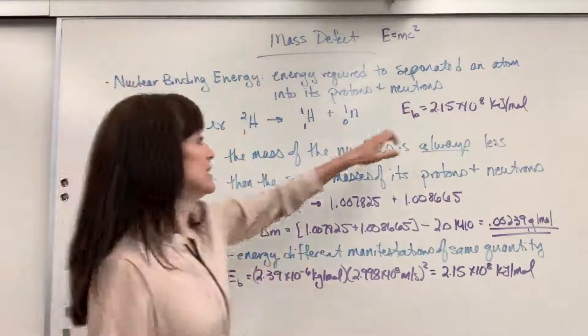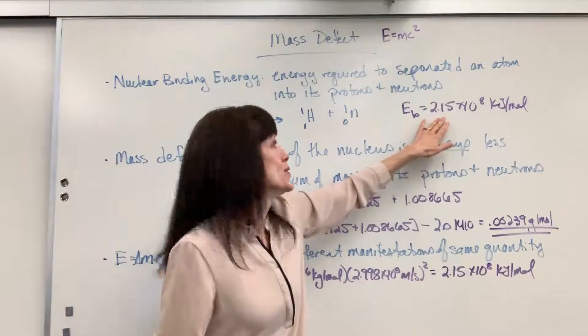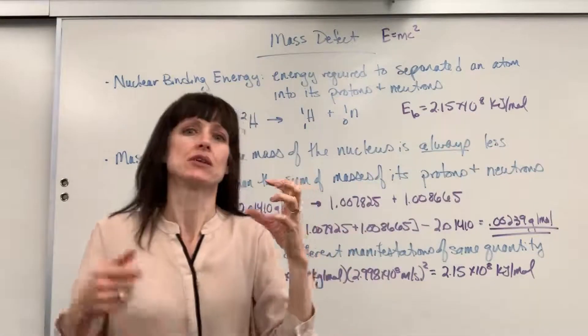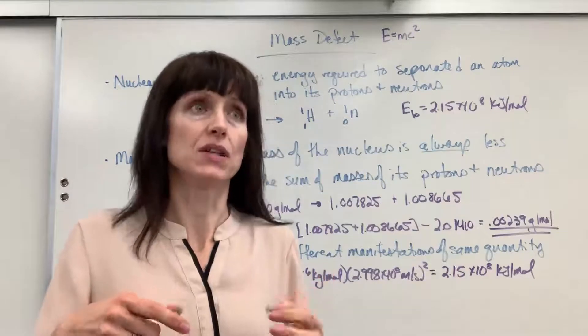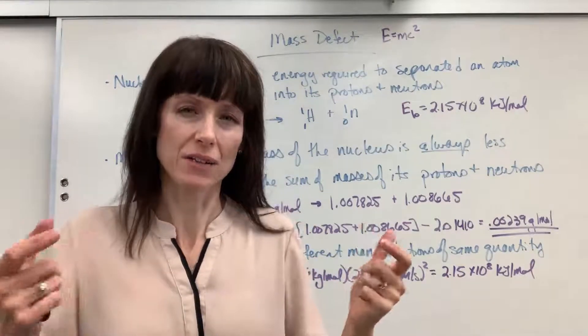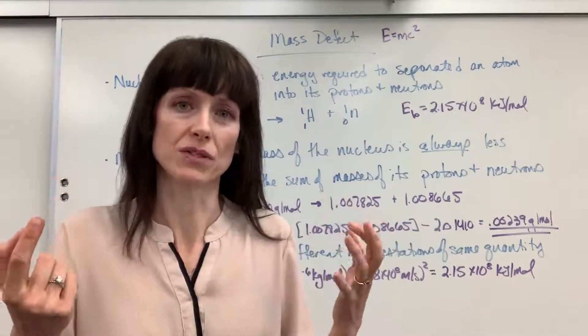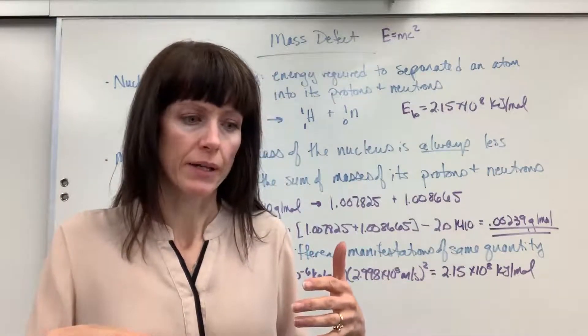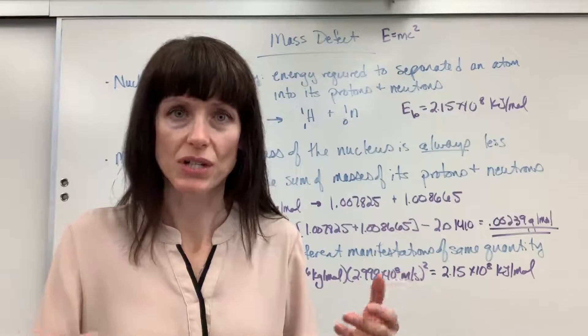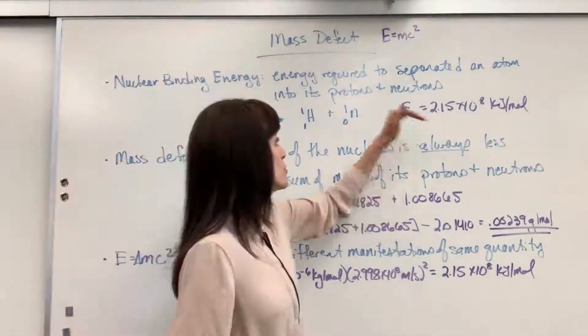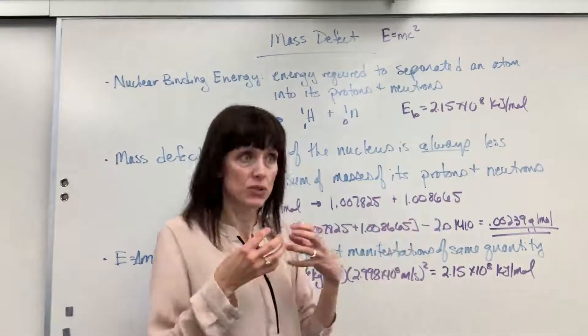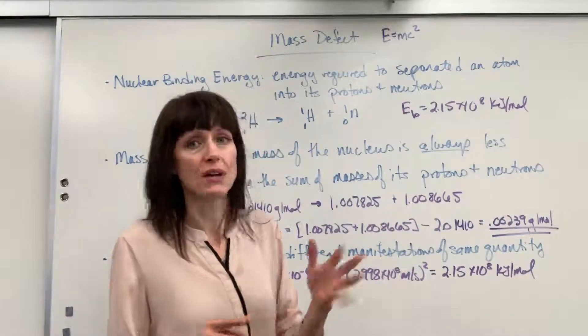The energy to break that apart is huge. 2.15 times 10 to the 8 kilojoules per mole. So you can see how this nuclear binding energy is so much greater than energy when we're doing traditional chemistry of just moving electrons, sharing, donating positive-negative charges. This nuclear binding energy, huge amount of energy. Why nuclear energy has so much energy, both fusion and fission for that matter.